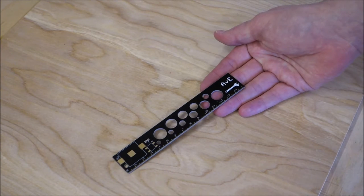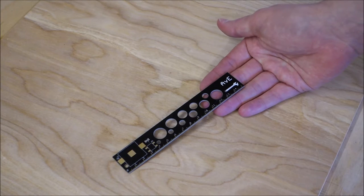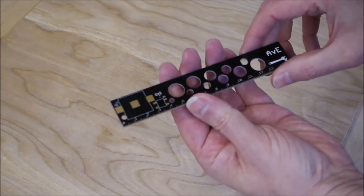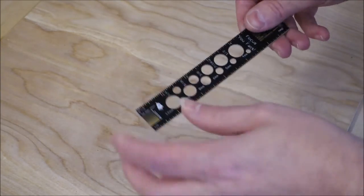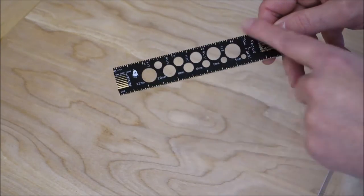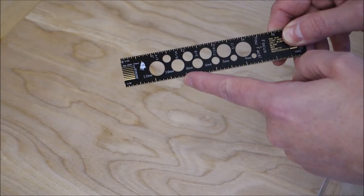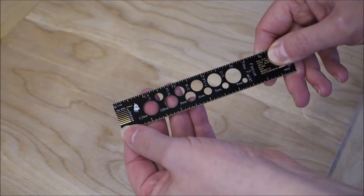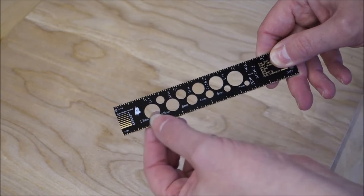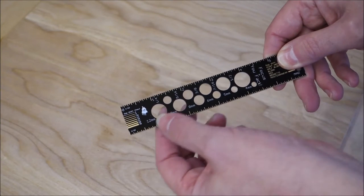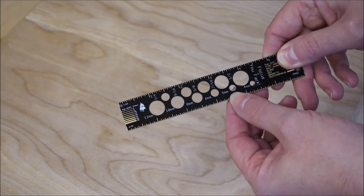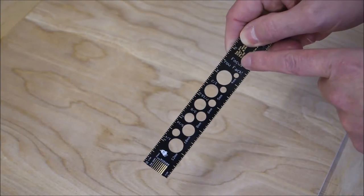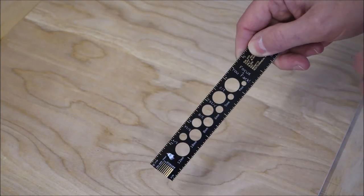This is the AVE shop ruler, a little gadget that the man sells from his Etsy store. There's a link in the description. It's a lovely little bit of kit. What we have here is imperial scales in both 1/32nd and 1/16th, gap widths in thou, and bolt hole sizes in both imperial and metric.